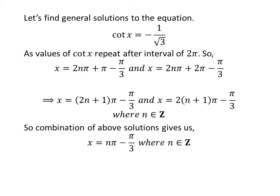As we know, 2 times the whole expression of n plus 1 is an even integer, and 2 times n plus 1 is an odd integer for any n. So the union of these two sets is the set of all integers. Therefore, the general solution to the equation is n times pi minus pi upon 3, where n is any integer.